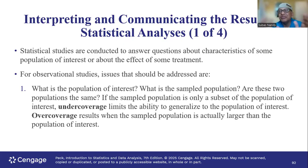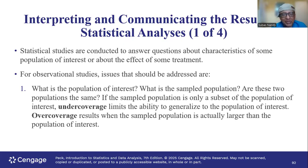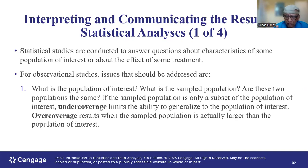Now, observational studies — as you remember — are where we are not manipulating or changing any of the factors or variables; we are just observing. We have to think about what is the population of interest and what is the sample population. Are these two populations the same? If the sample population is only a subset of the population of interest, under-coverage limits the ability to generalize. Over-coverage results when the sample population is actually larger than the population.